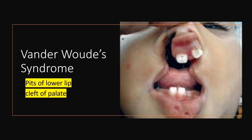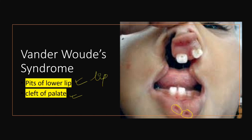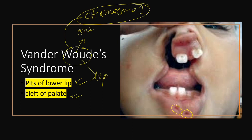The next is Van der Woude syndrome. What does it contain? You can see pits of the lower lip — two pits are visible here. It also includes cleft of the palate, and sometimes the lip as well. One memory tip: 'Woude' is phonetically similar to 'one,' and this syndrome is caused by a defect in chromosome one. So Van der Woude syndrome includes pits of lower lip and cleft of palate, sometimes lip also.